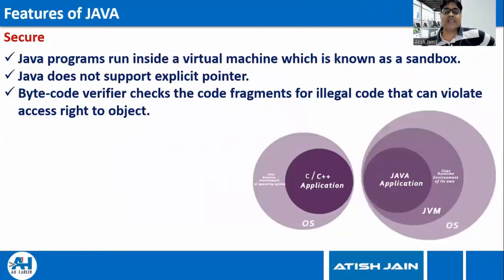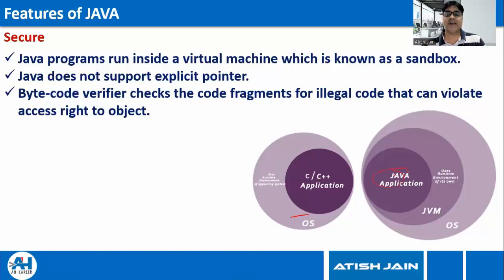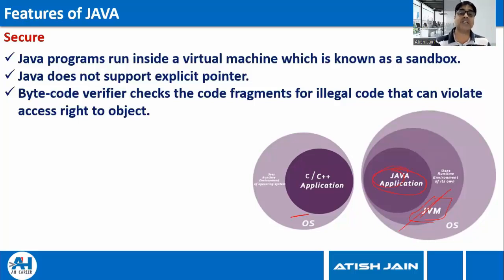Java is secure. C and C++ programs run on the operating system directly, and the OS can access these applications directly. C++ has the concept of pointers which can access memory addresses directly. But a Java application does not access the operating system directly — there is a middle layer called the JVM, Java Virtual Machine, between your operating system and your Java application. Java applications run on the JVM only, and the concept of pointers has been eliminated from Java. There is also a bytecode verifier that checks every piece of code whether it is legal or not.